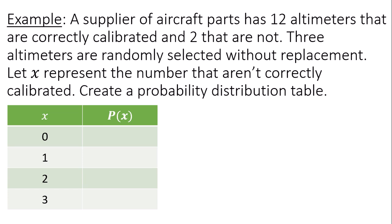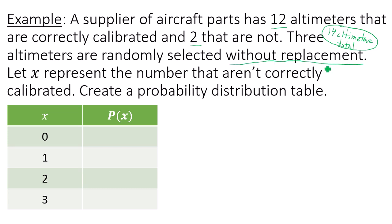From reading this question, I was able to pick up on a few things. First, if I have 12 altimeters that are correctly calibrated and two that are not, that means I have 14 altimeters total — that's how many we have to pick from in our first trial. I am selecting three without replacement, which means I will have one less every single time. So these trials are dependent on each other.